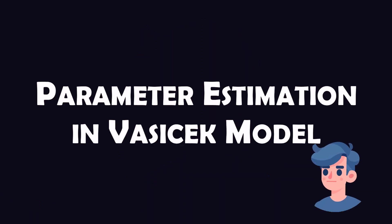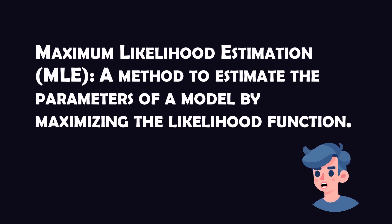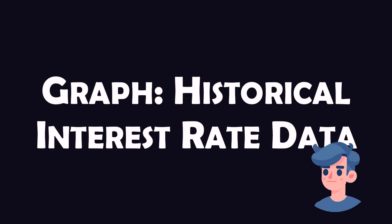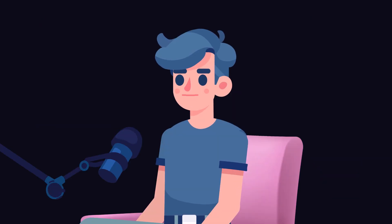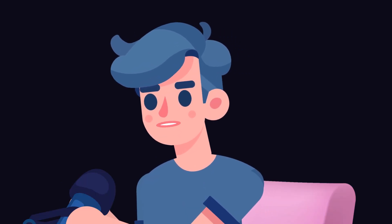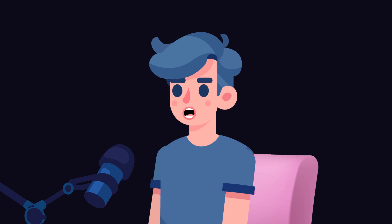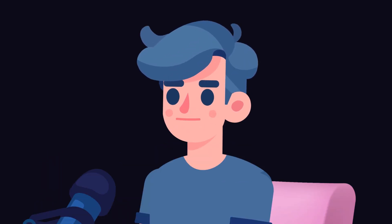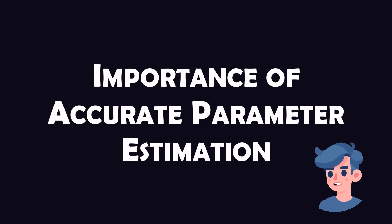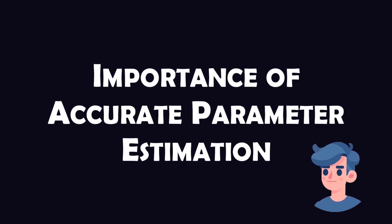Let's move on to another key concept: parameter estimation. How do we estimate the parameters a, b, and sigma from historical interest rate data? One common method is Maximum Likelihood Estimation (MLE). Consider historical short-term interest rate data over 10 years. Using MLE, we can estimate the parameters to best fit the Vasicek model to this historical data. Suppose we estimate a = 0.15, b = 0.03, and sigma = 0.02. These estimated parameters inform us about the behavior of future interest rates.